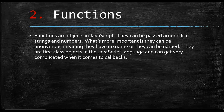Number two is functions — and this probably could have been number three with prototypes at number two, but either way they're both very important. A lot of people don't understand that functions are first-class citizens and that they're passed around. They don't understand the difference between an anonymous function and a named function. They don't understand the term callback function and how that works. They don't understand the asynchronous nature of JavaScript. Understanding functions and callbacks is an extremely important thing, and until you wrap your head around that, you're never going to be an advanced JavaScript developer.